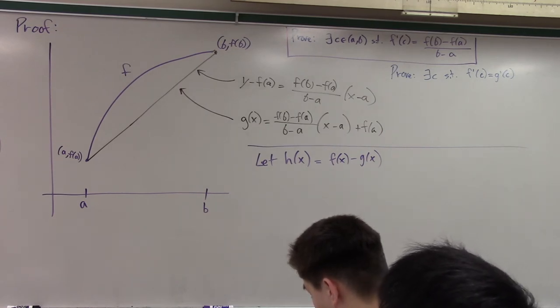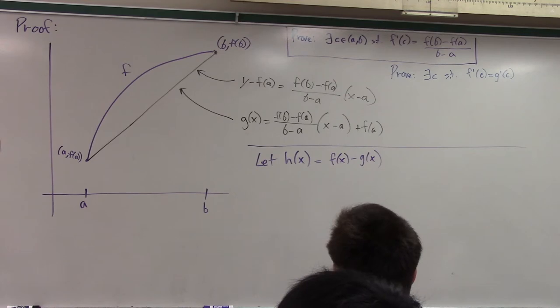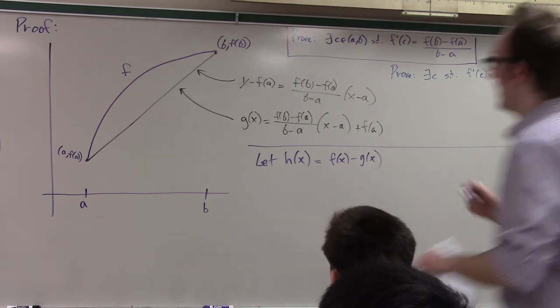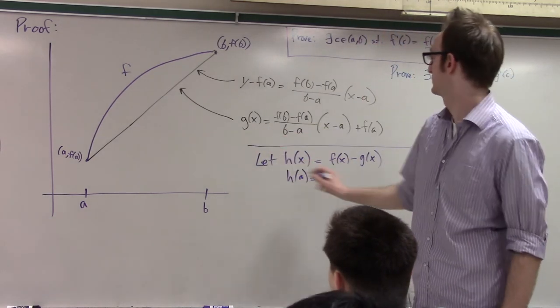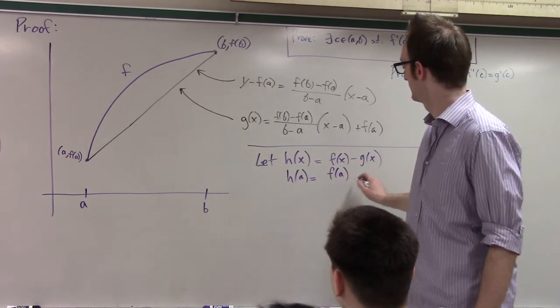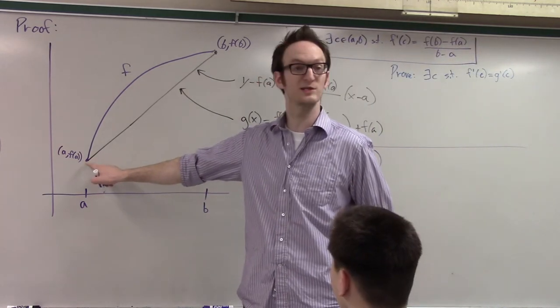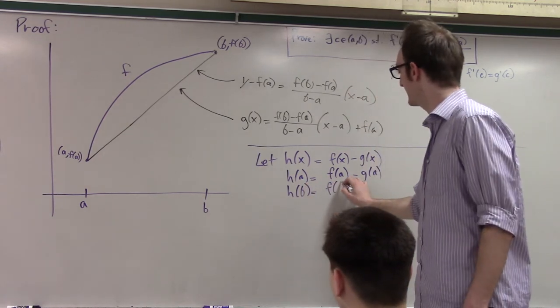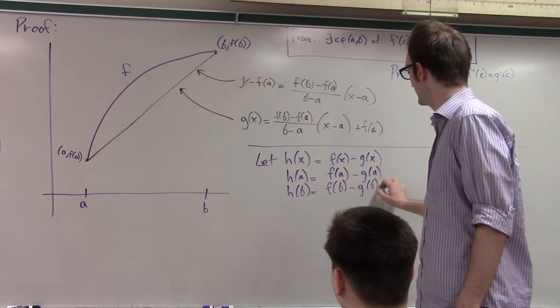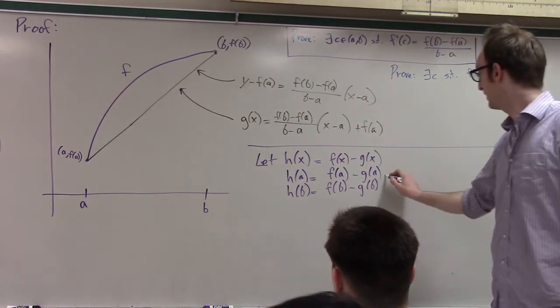So talk to me about this function, H. It has some pretty awesome properties. What's H of A? Zero. Zero, yeah, right? What is, if we look at this, H of A is just F of A minus G of A, but F of A and G of A are the same, right? Okay, and what is H of B? Zero. Yeah, it's F of B minus G of B. Also? Also zero. Ha-ha!